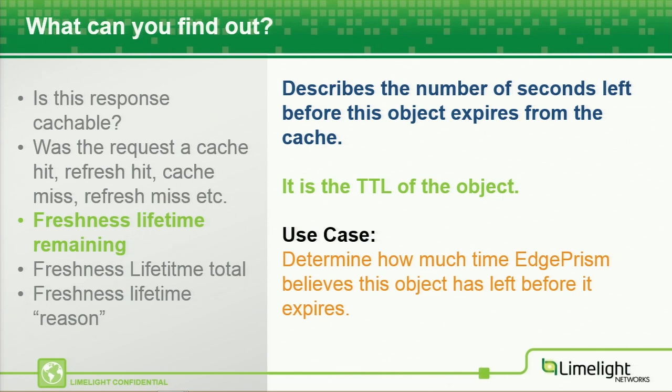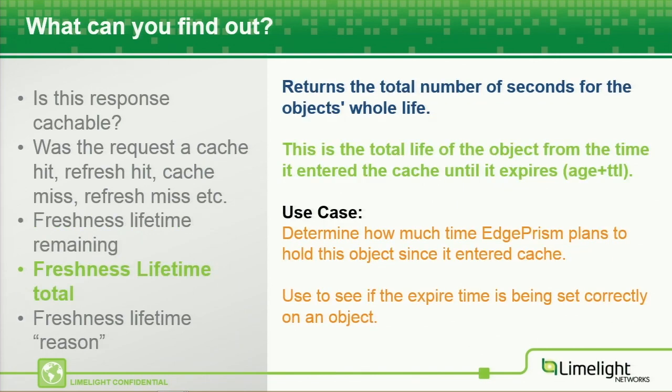You can also find out what the time to live of the object is — how long does this object have left in cache before we go back and talk to the origin to see if it's changed? In addition to that, we have the total lifetime of the object: from when it entered cache until its TTL expires, how long has it actually been in the CDN cache? This is a really good one to use to see if we're setting the TTLs correctly for an object, whether we're overriding what the origin is telling us to do, and if we're doing it properly.